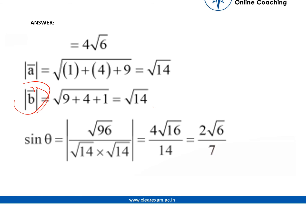Sin theta equals root of 96 divided by root 14 into root 14. That is 2 root 6 divided by 7.